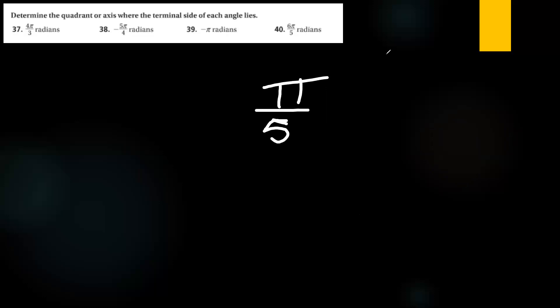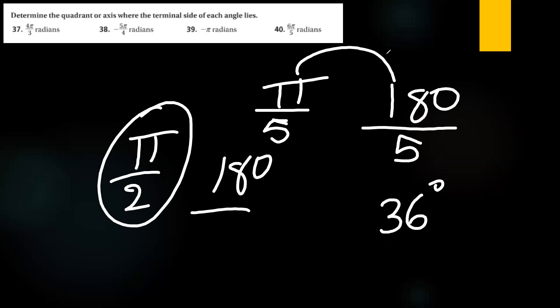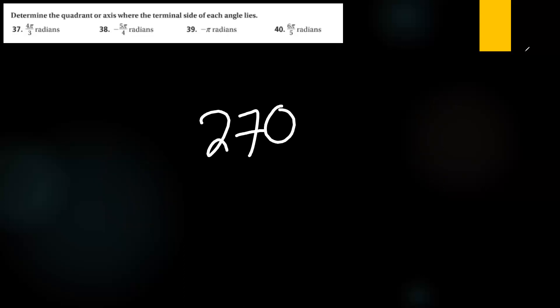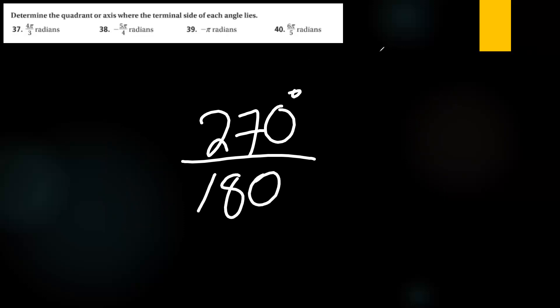Here's a quick mental method: for π/5, just divide 180 by 5 to get 36°. For π/2, divide 180 by 2 to get 90°. Going the other way — converting 270° to radians — divide by 180 and simplify: 270 ÷ 90 = 3, 180 ÷ 90 = 2, giving 3π/2.